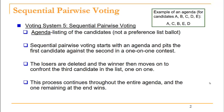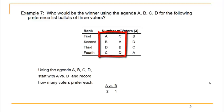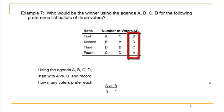The process continues throughout the entire agenda and the one candidate remaining at the end is declared the winner. In our first example, we have three voters choosing between four candidates A, B, C, and D using the agenda A, B, C, D. We start with the first head-to-head matchup: A versus B. Looking at the preference list ballots, two voters prefer A to B and only one voter prefers B to A.